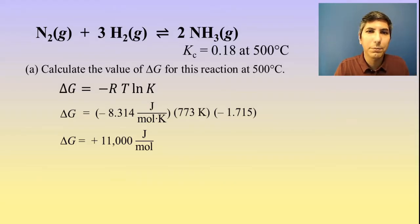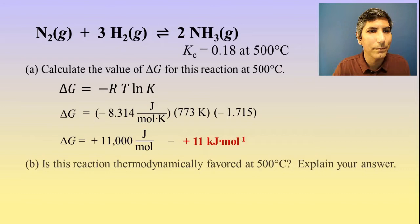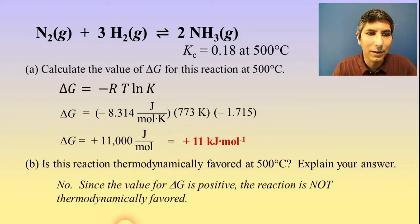Now, we normally express these thermodynamic values in kilojoules, don't we? So we just move that decimal point over a few places, and we have positive 11 kilojoules per mole. So that's our answer for this one. Part B says, is this reaction thermodynamically favored at 500 degrees Celsius? Explain your answer. Well, all we have to do is look at the sign of delta G. And since it is a positive value, we'd have to say that no, this is not thermodynamically favored since that delta G is positive.